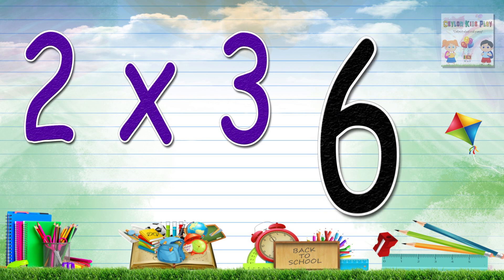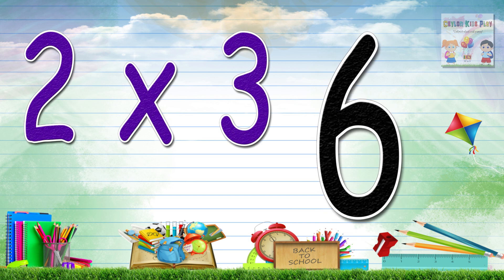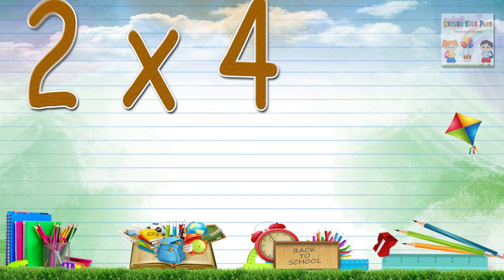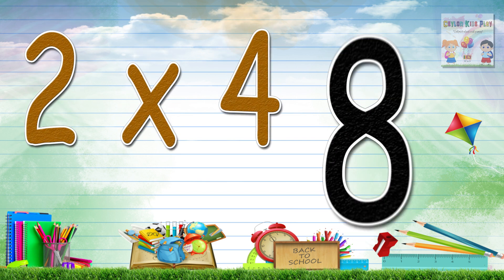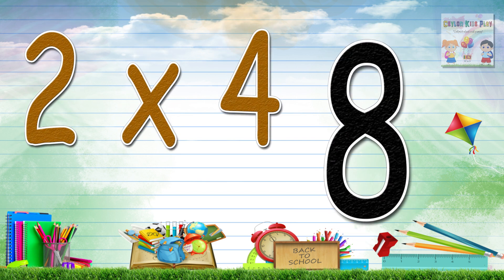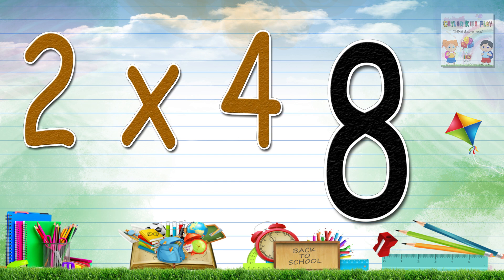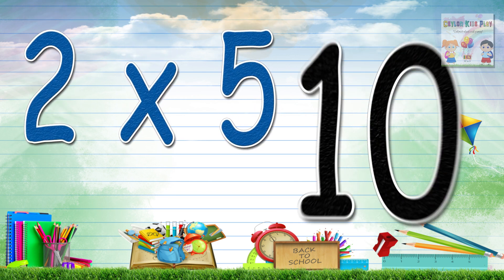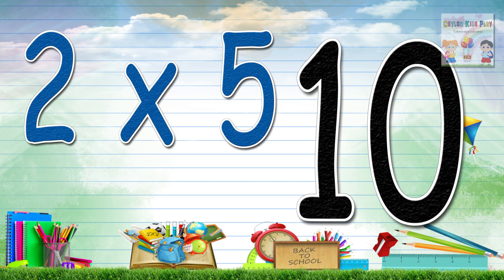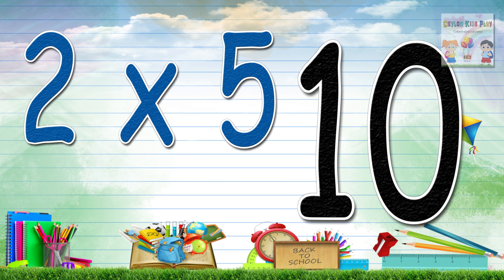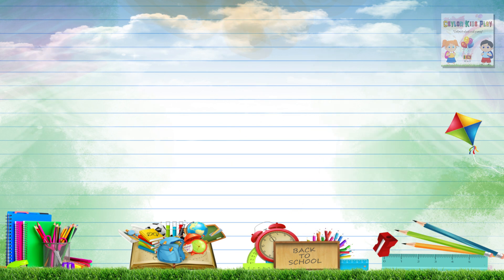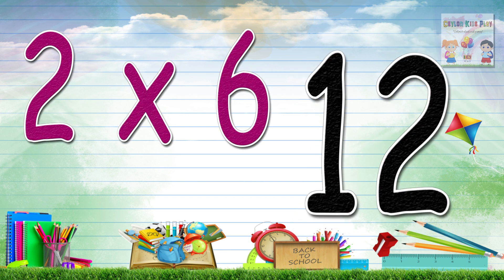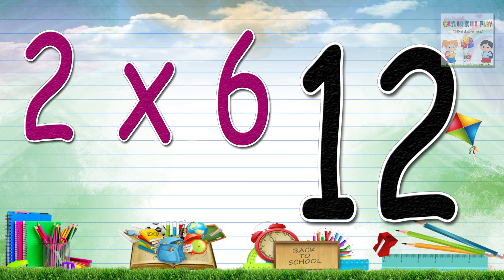Two by three, six — Dewarak eke, dekay. Two by four, eight — Dewarak eke, haterei. Two by five, ten — Dewarak eke, dekay. Two by six, twelve — Dewarak eke, dholeh.